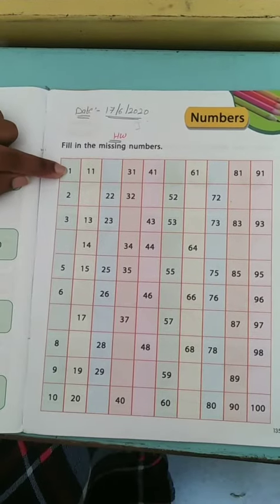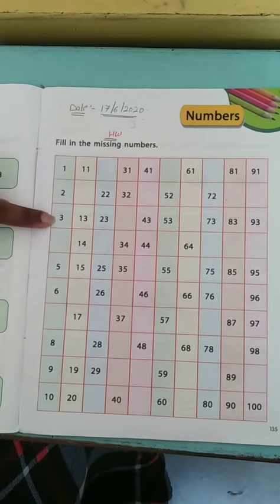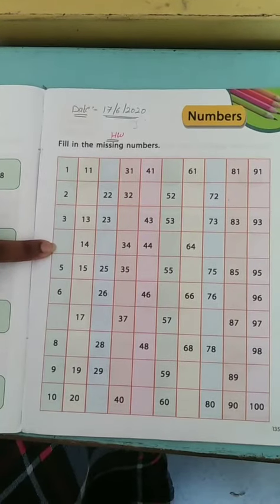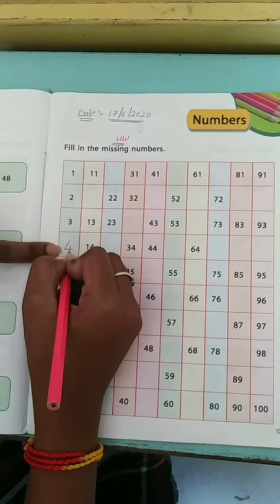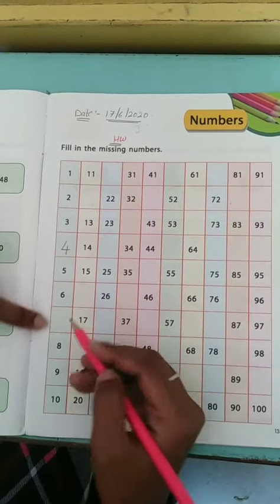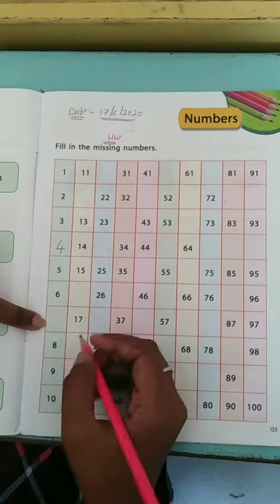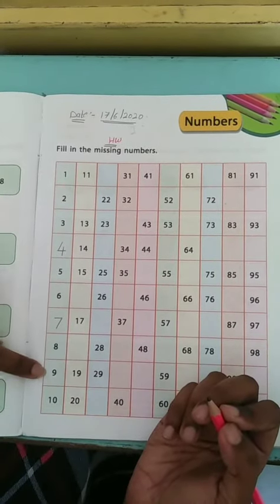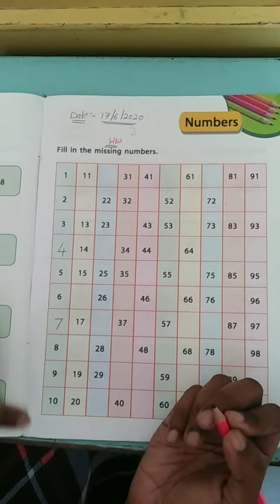What is given here? 1, 2, 3. Then what is missing? Which number is missing here? Yes, number 4. You have to write number 4. Then after number 5, 6, what is missing here? Number 7. Next, number 8, number 9, and 10. Done our first line.